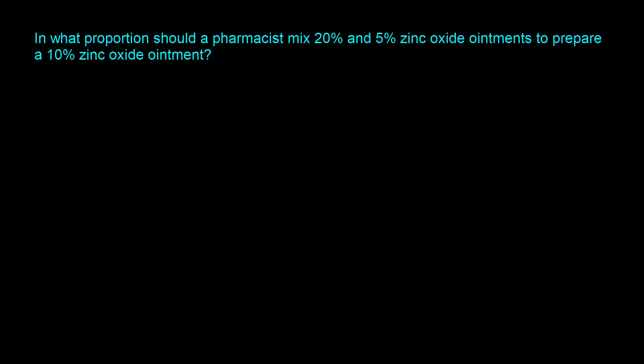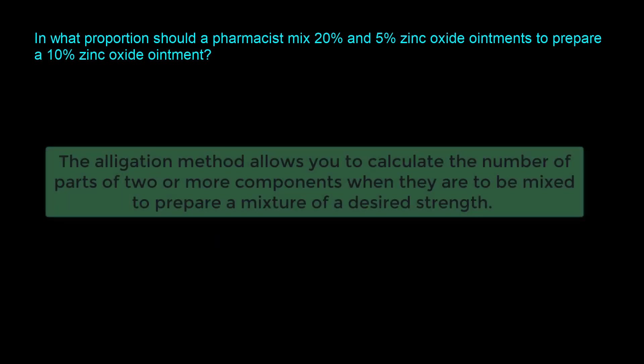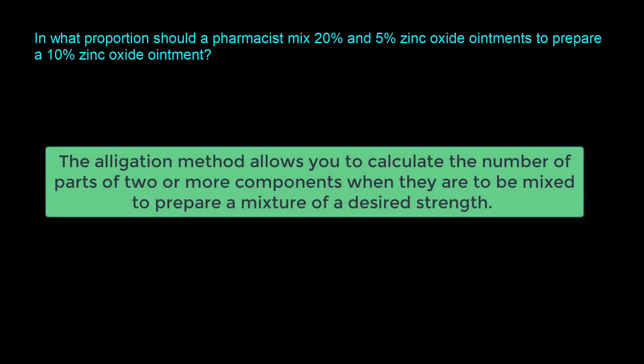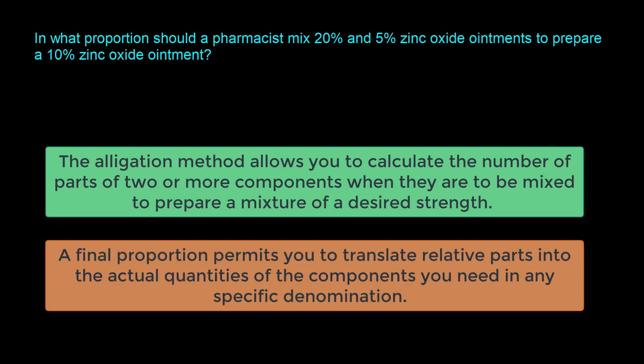The allegation method is a really powerful method that allows you to calculate the number of parts of two or more components when they are to be mixed to prepare a mixture of a desired strength. Once you've identified what the final proportions are, you can translate those proportions into the actual quantities of the components that you need in any specific denomination.